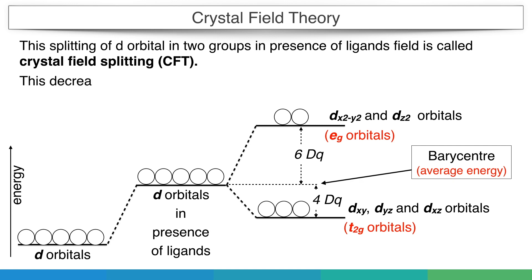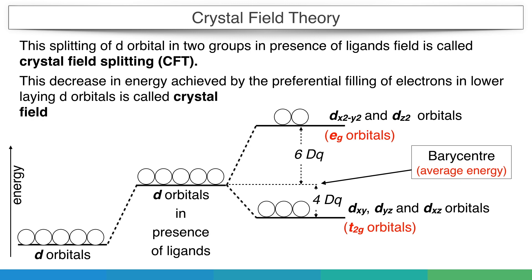This decrease in energy achieved by preferential filling of electrons in lower-lying d orbitals is called crystal field stabilization energy. In simple words, the difference of actual energy from the average energy or barycenter is called crystal field stabilization energy.